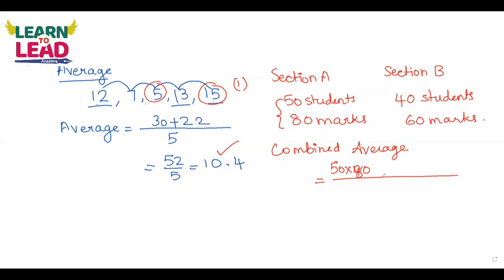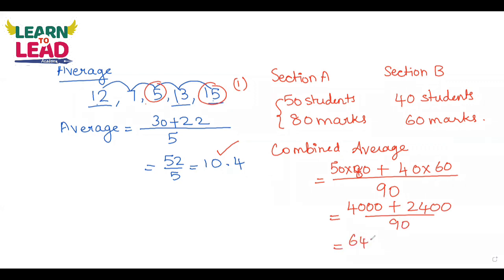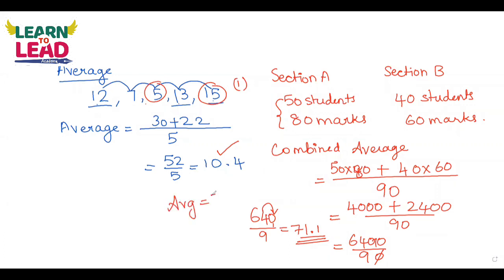To find the combined average, take the total marks: 50 into 80 plus 40 into 60, divided by the total number of students, which is 50 plus 40 = 90. That gives 4000 plus 2400 = 6400 divided by 90. Cancelling the zeros: 640 by 9. Dividing: 63 remainder 10, so 71.1 is the combined average.